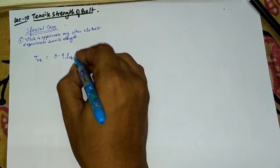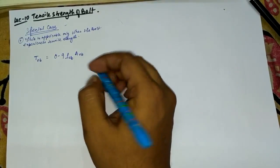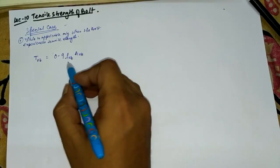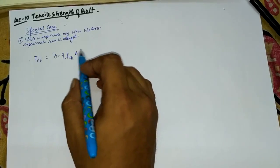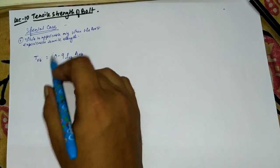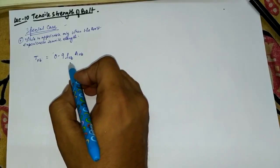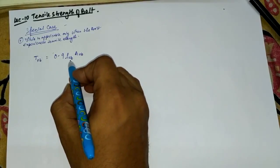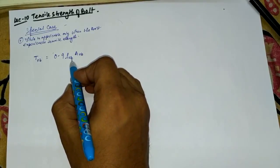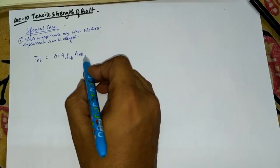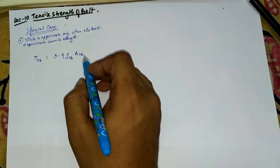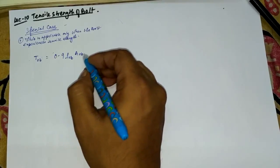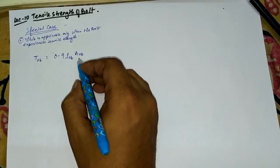The formula is: Tnb equals 0.9 × fub × Anb. Force equals stress multiplied by area. Here, fub is the ultimate tensile strength of the bolt, and Anb is the net area of the bolt, which is 78% of the shank area. So Tnb = 0.9 × fub × Anb.